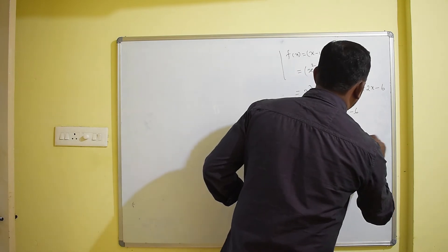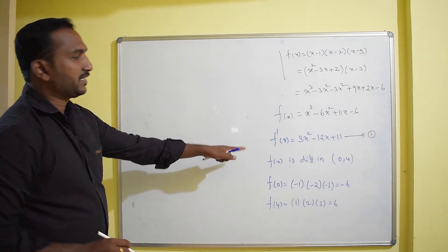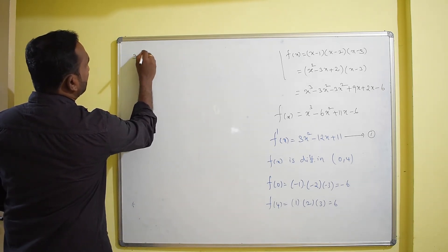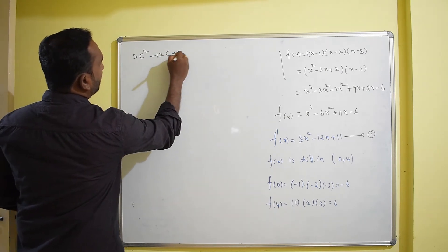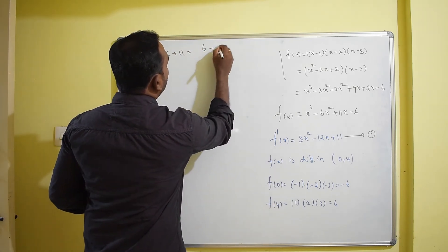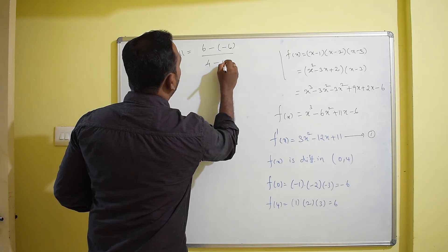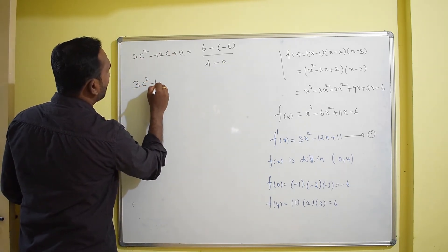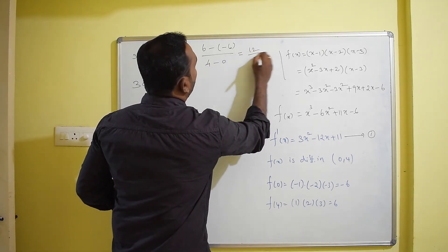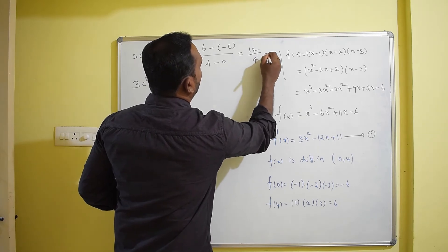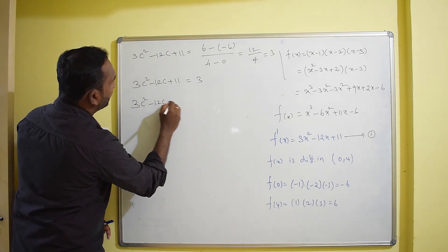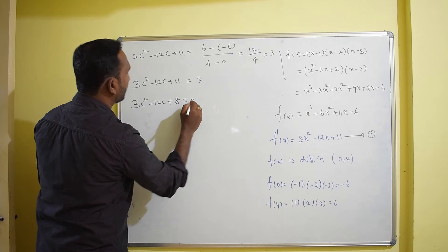We already know f'(x), so replacing x with c gives f'(c) = 3c² - 12c + 11. This equals [f(b) - f(a)] / (b - a) = [6 - (-6)] / (4 - 0) = 12/4 = 3. So 3c² - 12c + 11 = 3. Bringing all terms to one side: 3c² - 12c + 8 = 0.